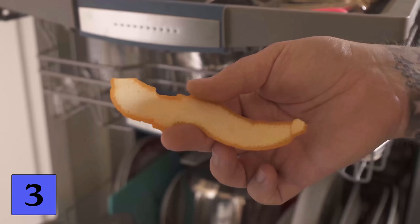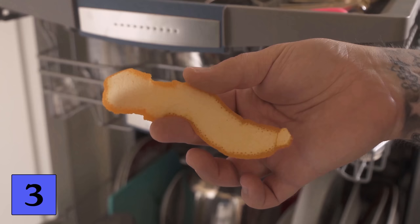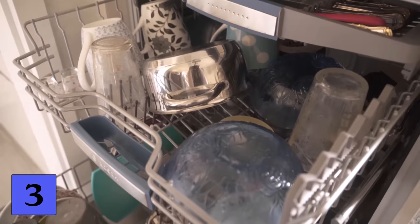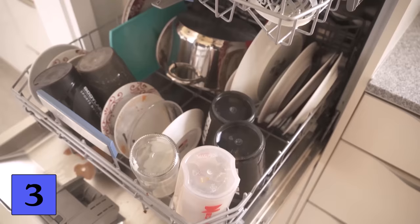For the third trick you need citrus peels, from an orange, tangerine, or lemon. Because if you eat or use one you shouldn't throw the peel away. You can use it wonderfully in your dishwasher. This has several advantages. But first I'll show you how to use it in the first place so that it works.